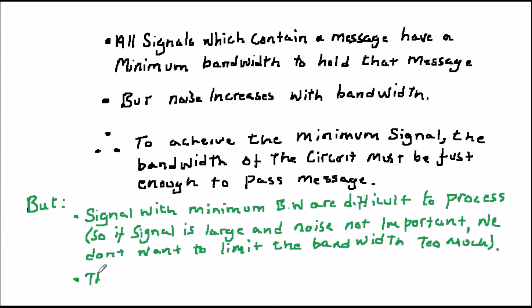You can probably see this if you look at the wibbly wobbly sine wave of the minimum bandwidth signal, which is much more difficult to process and to discriminate than the nice clean square wave of a signal which has a larger bandwidth.